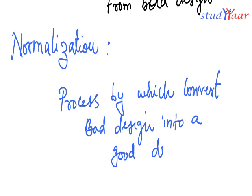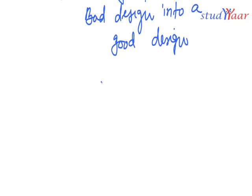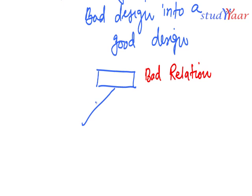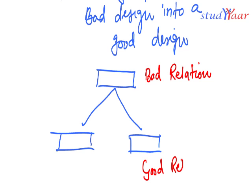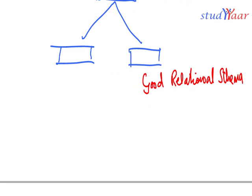Normalization is the process by which I convert a bad design into a good design. In other words, it is a process by which a bad relational schema — bad in terms of quality — I decompose a bad relational schema into two or more good relational schemas, such that these schemas adhere to certain design restrictions.